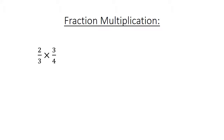Fraction multiplication. Two over three times three over four equals six over twelve. Simplify to one over two.